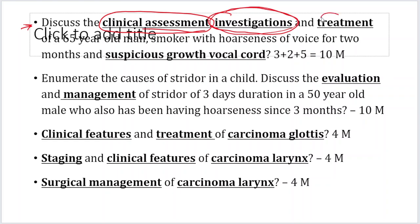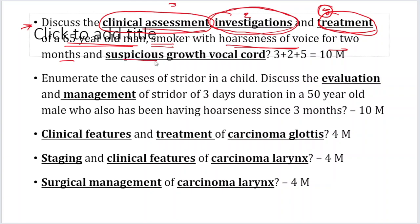Discuss the clinical assessment, investigations, and treatment. The examiner is giving 3 marks for clinical assessment, 2 marks for investigations, and 5 marks for treatment of a 65-year-old male who is a smoker with hoarseness of voice for 2 months and a suspicious growth on the vocal cord. He has already put the diagnosis here — suspicious growth vocal cord — so he is talking about glottic carcinoma, not supraglottic or subglottic.